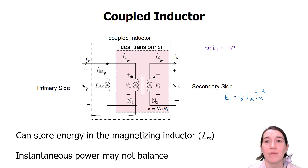So this means that the instantaneous power may not balance. For an ideal transformer, we know it must balance the input power and the output power. But for a coupled inductor, the primary voltage times the current may not equal the secondary voltage and current.